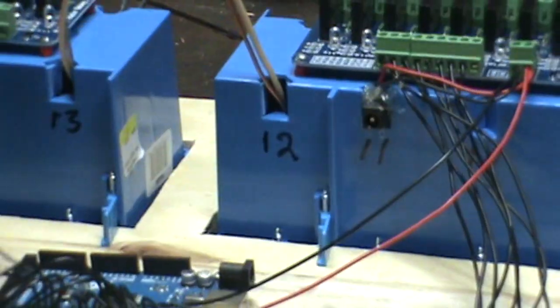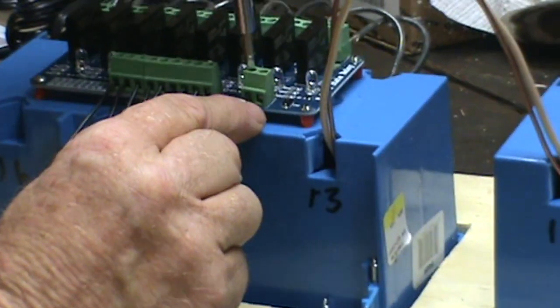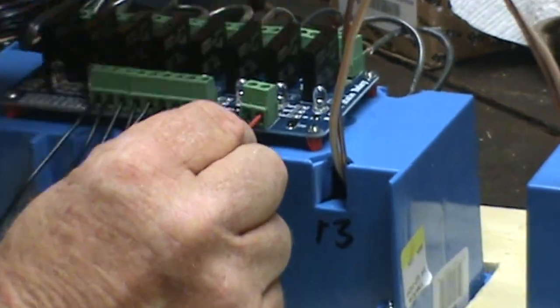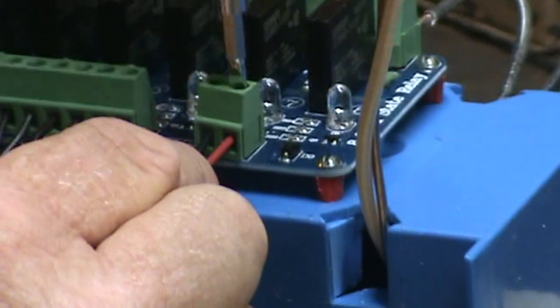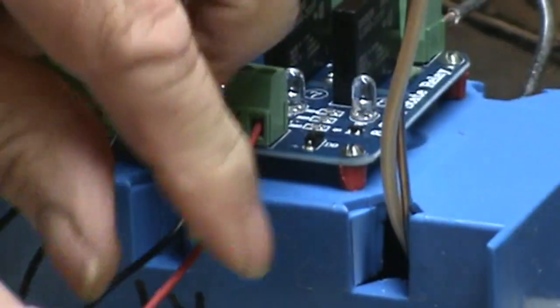Now the black into the ground side, and the red into the voltage side. And now our relays are powered.